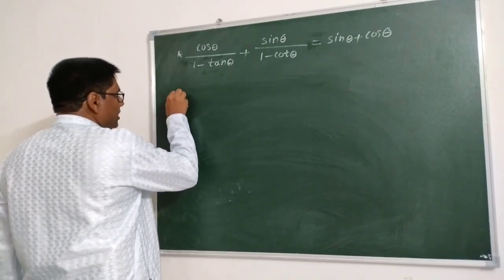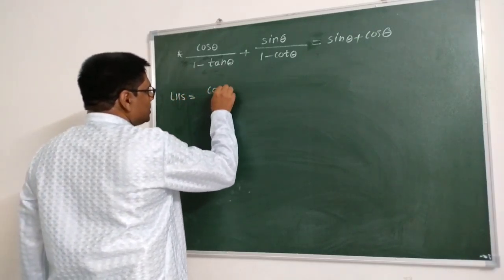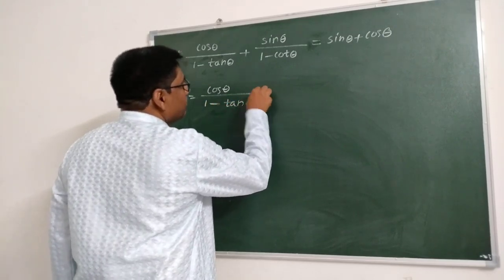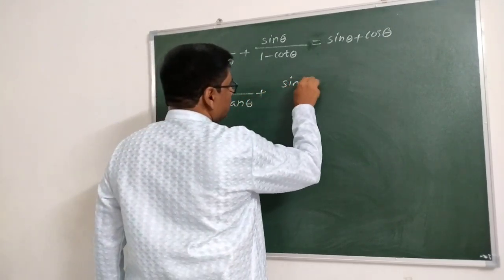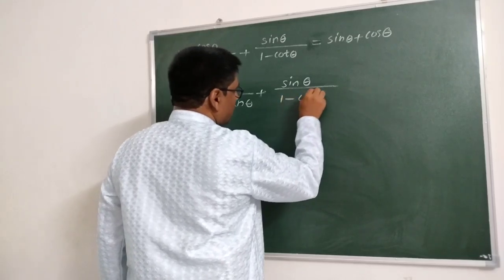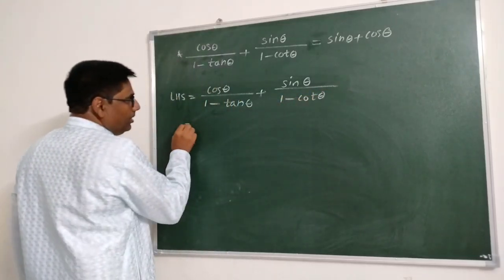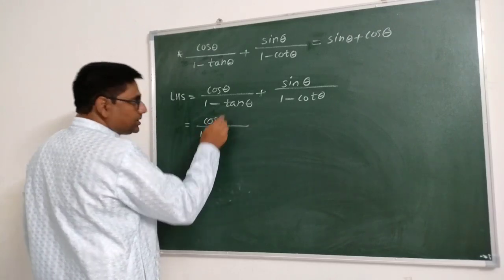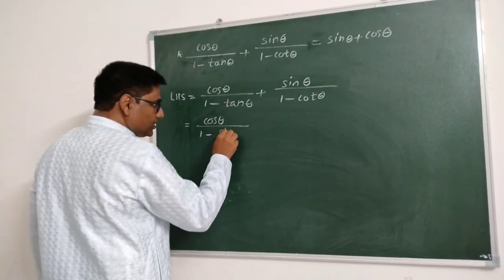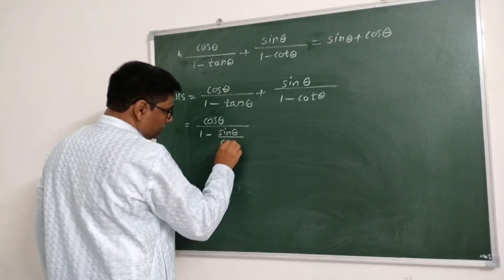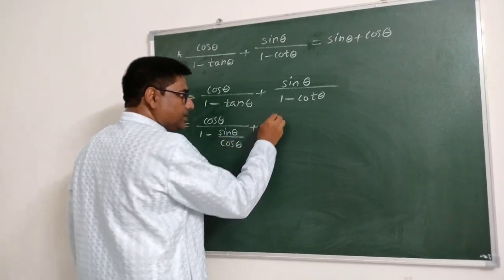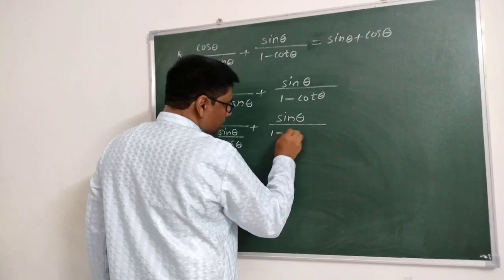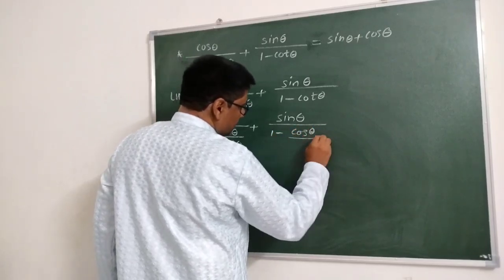Now let us take the left hand side. LHS is equal to cos θ upon (1 minus tan θ) plus sin θ upon (1 minus cot θ). Now this can be written as cos θ upon (1 minus sin θ/cos θ) plus sin θ upon (1 minus cos θ/sin θ).